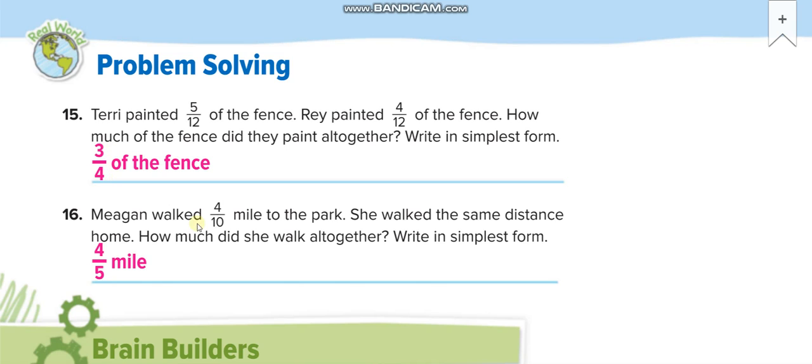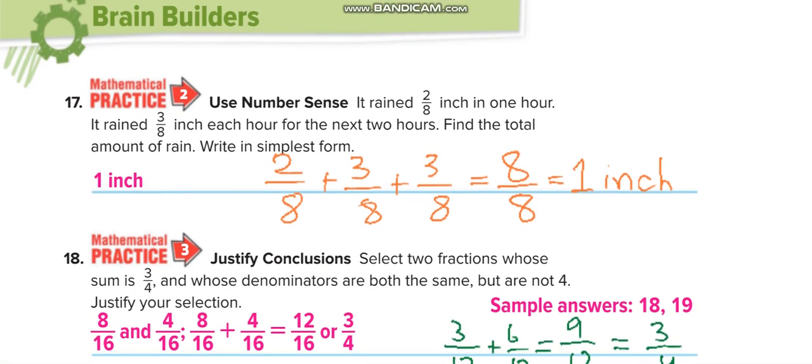Megan walked 4 tenths miles to the park. She walked the same distance home, so you will add this one two times: 4 over 10 plus 4 over 10 equals 8 over 10. Then you will simplify it: divide by 2 up, divide by 2 down, it will become 4 over 5.